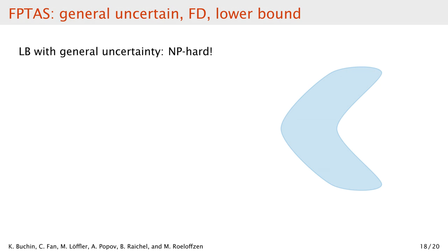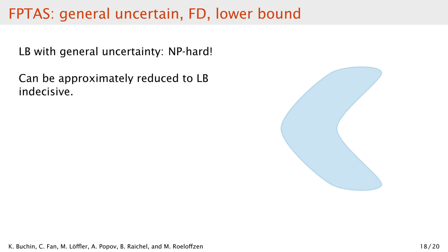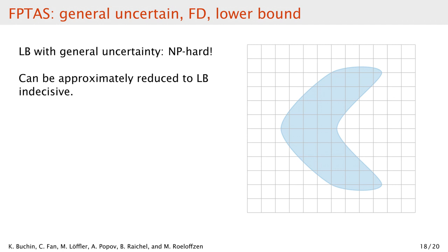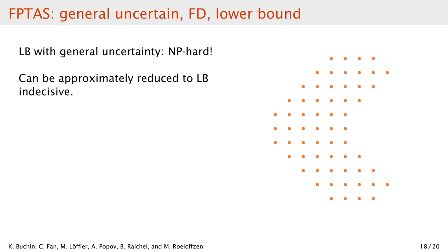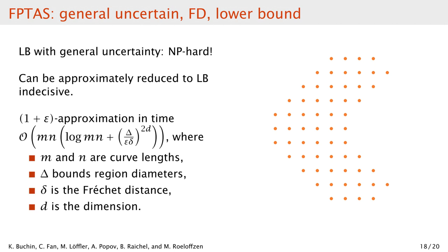Now that we have shown NP-hardness for the lower-bound Fréchet distance in some models, we discuss what we can do about it. Note that here we talk about general uncertainty regions, not only line segments. The main idea is that we can leverage our indecisive-case algorithm to construct an approximation by discretizing the regions. We place a suitably sized grid over our regions, then we construct an indecisive point per region where the options are the grid points. We place the orange points at the grid vertices in a way that approximates our region appropriately. Now the orange points are all the options for the single indecisive point we construct. Having done this for all the regions, we can use the indecisive-case algorithm. This gives us a 1+epsilon approximation — a fully polynomial time approximation scheme — given bounds on the uncertain region diameters relative to the Fréchet distance.